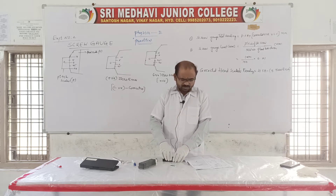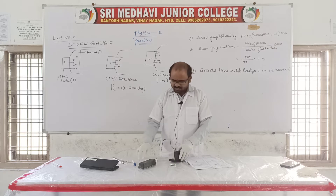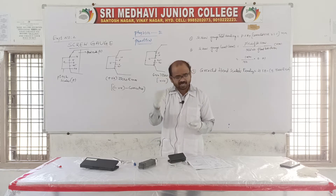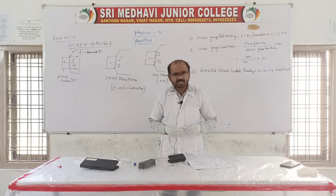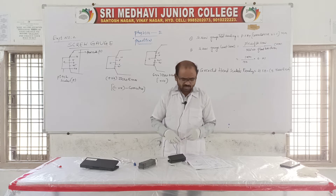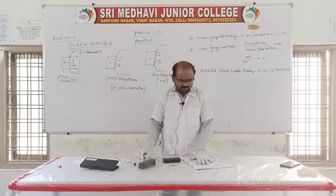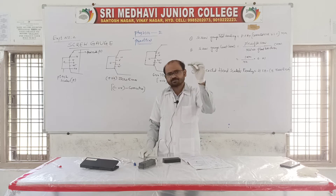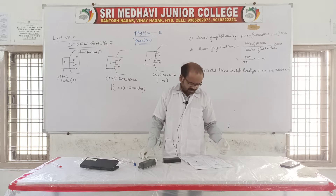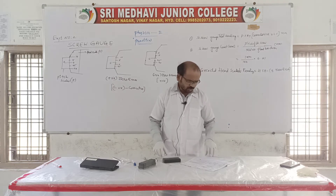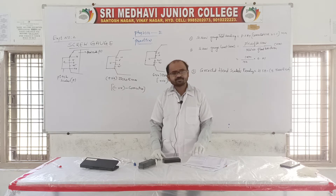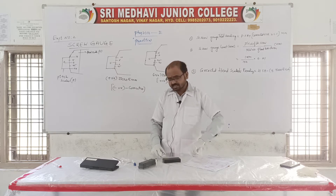The screw gauge is used to find the thickness of a given glass plate. We can measure the thickness directly instead of taking length and breadth. Not only that, we can also measure the radius of a given cylinder, because sometimes they may ask you to find the volume or radius of a given cylinder.